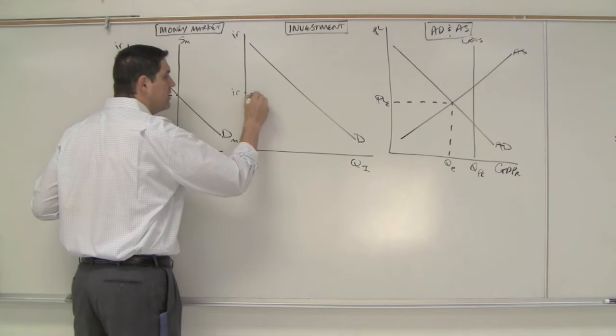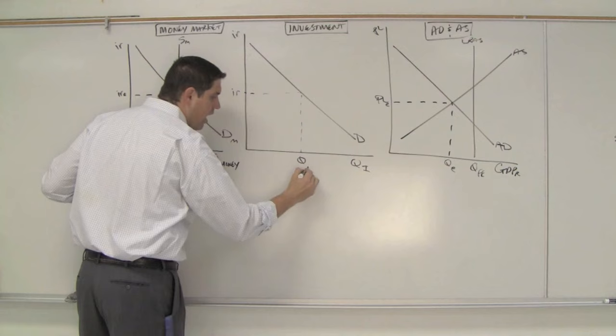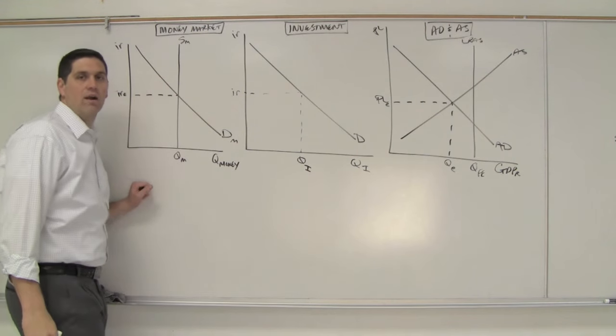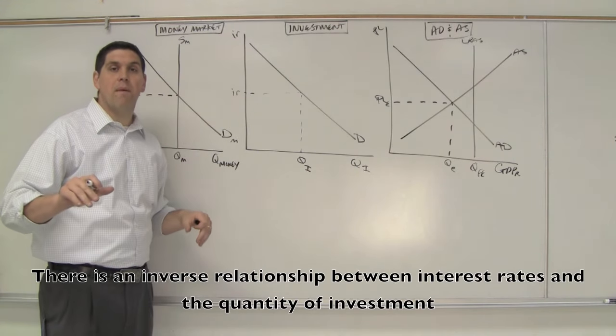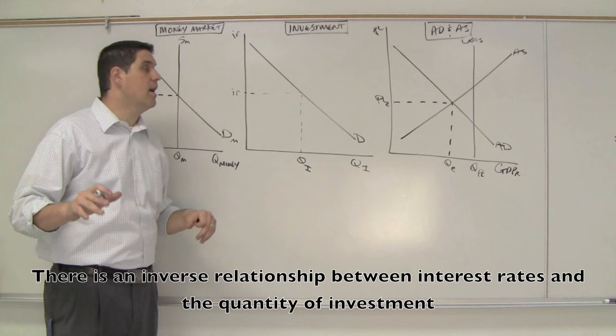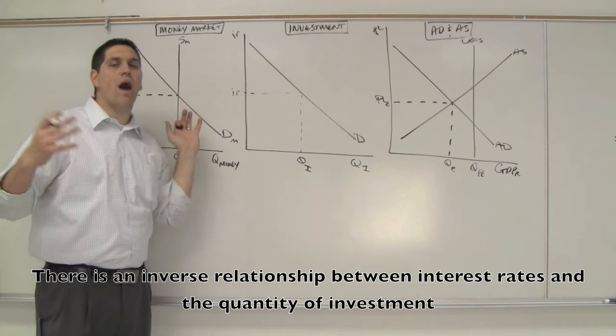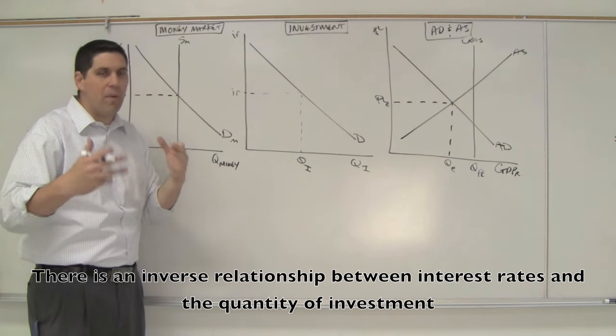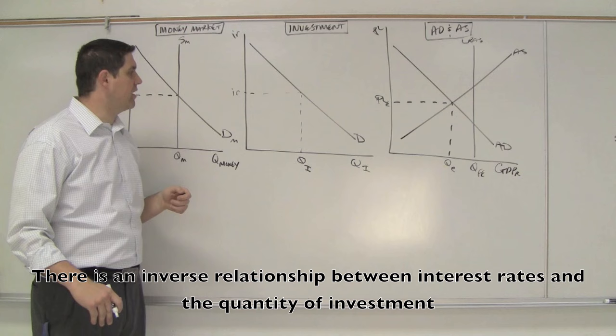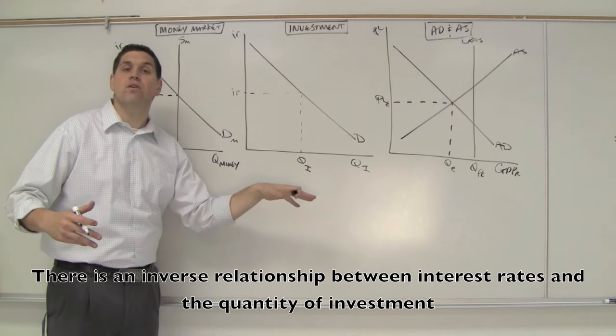Now, that interest rate determines the quantity of investment that takes place in our economy. This middle graph shows you investment. Remember, investment is spending by businesses. A high interest rate, firms do not want to borrow money, and therefore they don't want to expand and grow and buy machinery. At a low interest rate, they want to do those things.